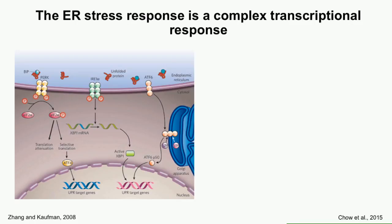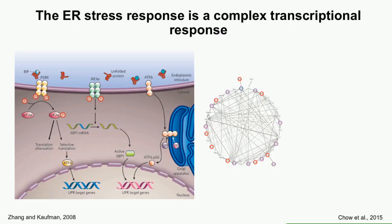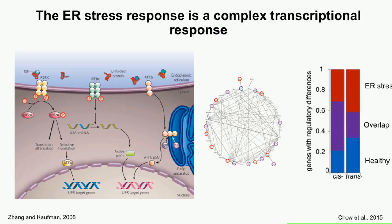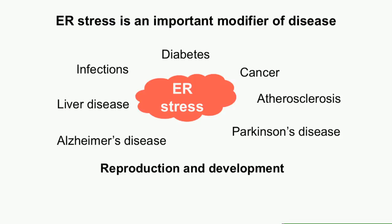The cell responds to this stress with a very large, complex transcriptional response, mainly driven by three different pathways: PERK, IRE1, and ATF6. Together, these three pathways turn on hundreds to thousands of genes aimed at fixing the misfolded protein problem and clearing the proteins from the ER. We've previously shown that this complicated transcriptional response is variable between individuals in a population, with quite a complicated genetic architecture underlying those differences, making ER stress a very important modifier of disease.